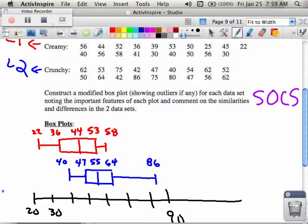But when I look at the box, which is where the most dense part of my data is, and I look at the similarities between creamy and red and crunchy and blue, what I notice is that the difference between the Q1 and the Q3 is 17. And the difference between the Q1 and the Q3 for the crunchy is 17. Interesting. Same kind of density in the middle. So these are the things that you want to talk about with the SOCS.